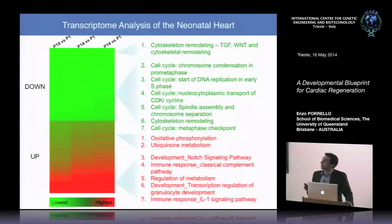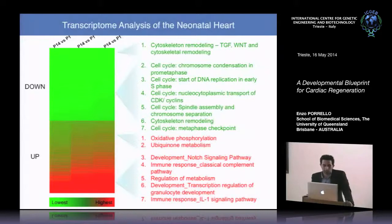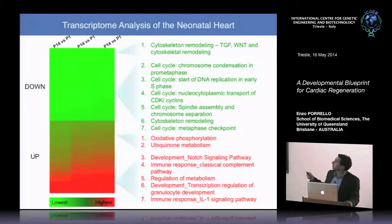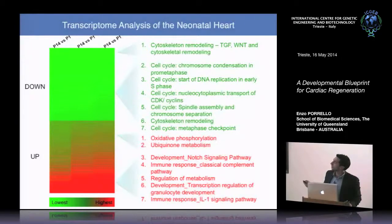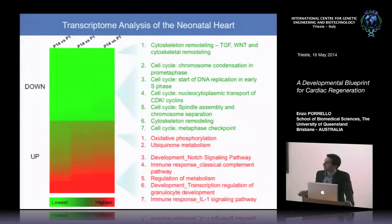Our transcriptome analysis between postnatal day 1 and day 14 identified genes going down (green) and up (red) from P1 to P14. Gene ontology analysis found genes related to cytoskeleton and TGF/Wnt signaling pathways decreasing, and various cell cycle control genes decreasing — consistent with the literature. Genes involved in cell cycle control and mitosis were transcriptionally repressed from P1 to P14, while upregulated genes were involved in oxidative phosphorylation, metabolism, the Notch pathway, and the immune system.